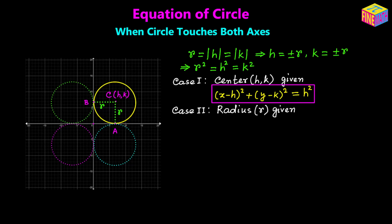Next, let's talk about the second case where the radius has been provided and we have been told that the circle touches both the axes — that is where the four possibilities come in. We begin with the fundamental equation of a circle: (x − h)² + (y − k)² = r². Here, in place of h and k, I am going to use plus or minus r. Then the equation is going to look like: (x ± r)² + (y ± r)² = r². That is the set of equations of the circles where the radius is r and they touch both the axes.